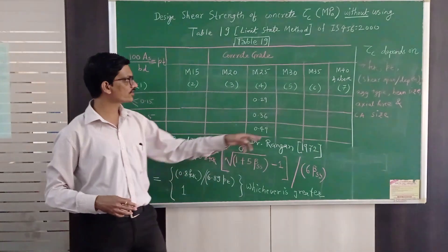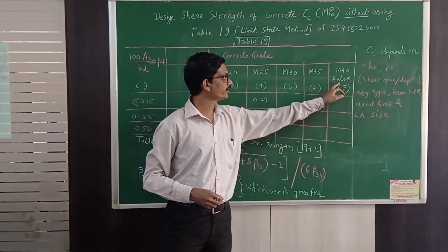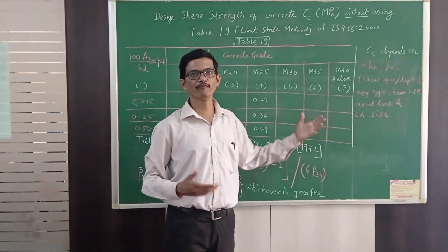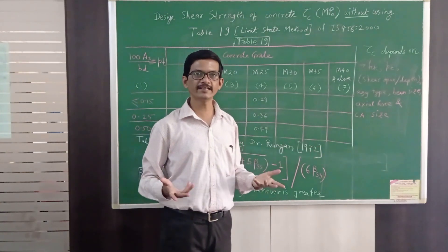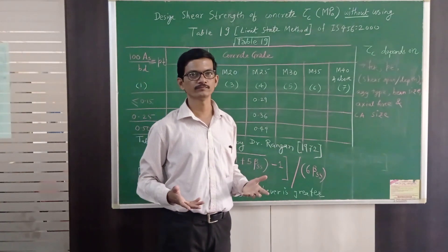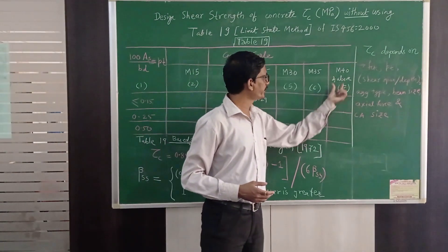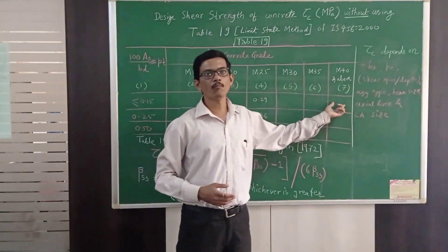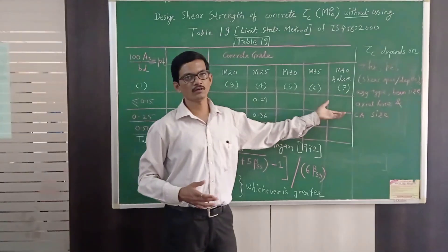But still if we use this table that means because M40 and above, that means it can be M50 also, it can be M60 also, it can be M90 also, it can be M120 also. So M40 and above that means suppose we have M120 concrete for a high rise building.